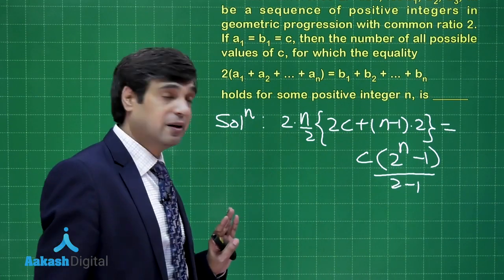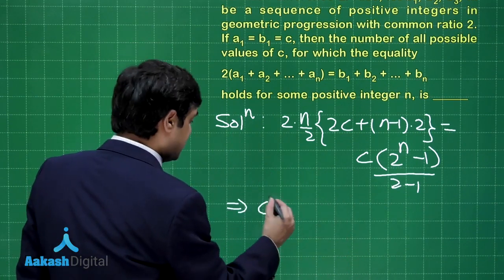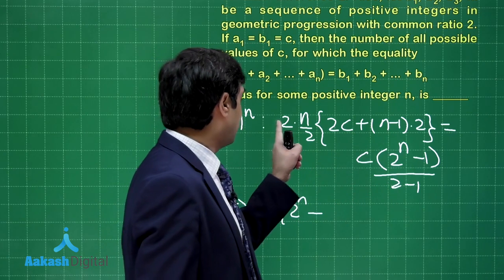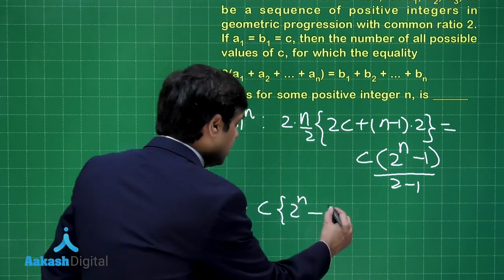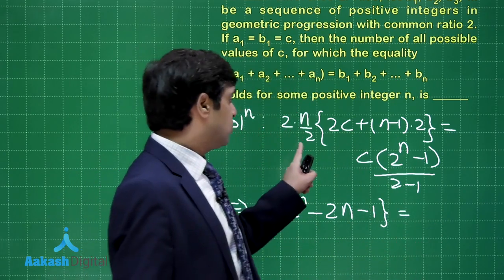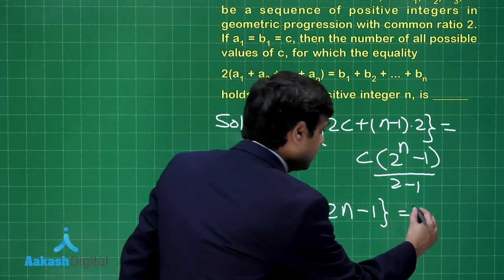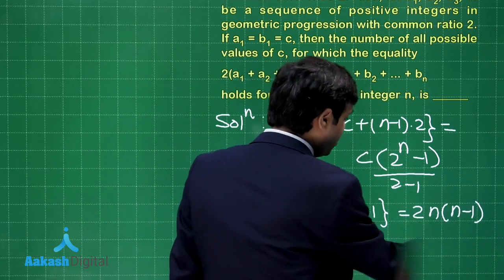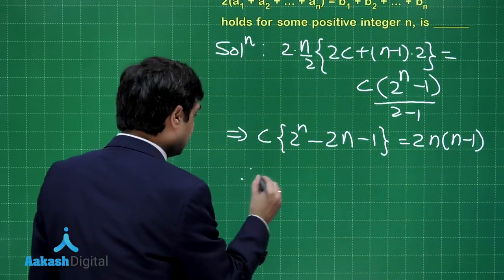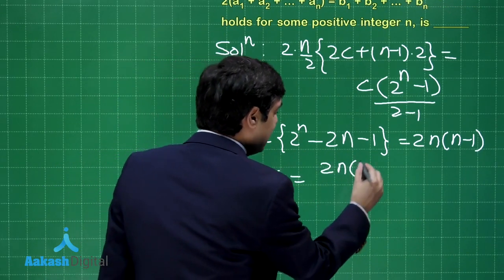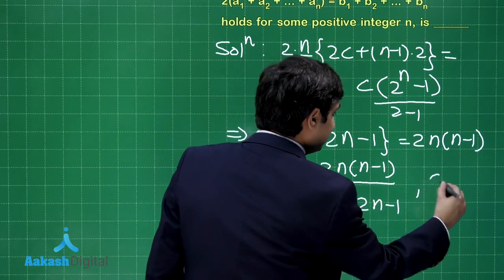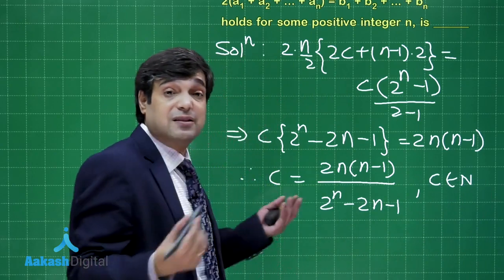The 2 cancels, and simplifying we get C times 2^N minus 2N minus 1 equals C times (2^N − 1). Rearranging, we can get C as (2^N − 1) / (2^N − 2N − 1), where C is a natural number and N is a natural number.